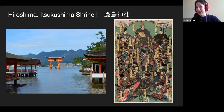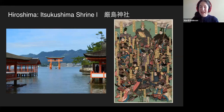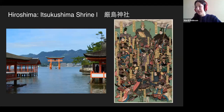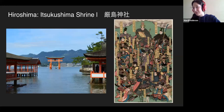In Shintoism, while it doesn't say 'thou shall not kill,' there is a code of purity — killing someone on sacred ground is a big no-no, and blood and death are big taboos. So after a battle on the island, it was considered tainted. They burned it down on purpose and rebuilt it in the style of the 12th-century Taira. There's just so much drama — they've probably made a movie about it at some point.